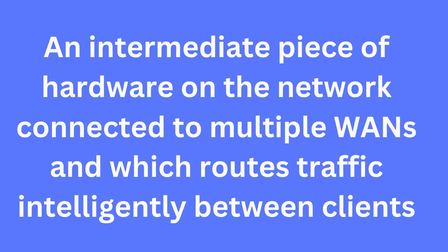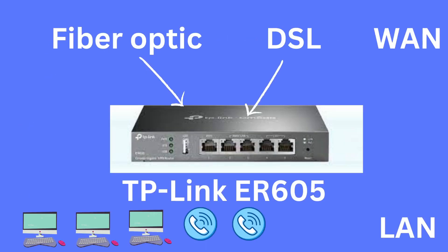A home networking definition of load balancing: it involves installing an intermediate piece of hardware on the network — that piece of hardware will be a router — connecting to multiple WANs or internet connectivity sources, and routing that traffic intelligently between clients. As an example of a wired router that can do load balancing, I use the TP-Link ER605 on my home network. An example would be two internet connections coming in — let's say a fiber optic line and a DSL.